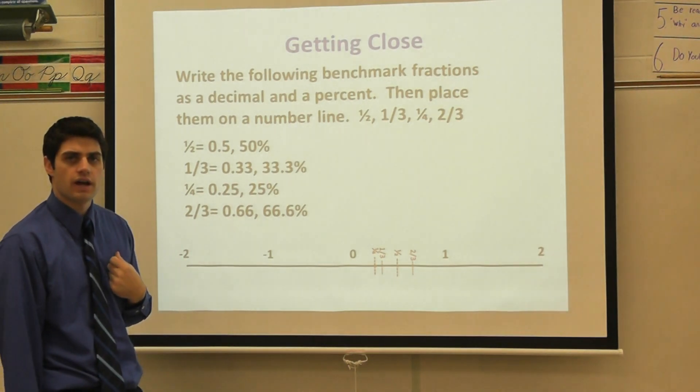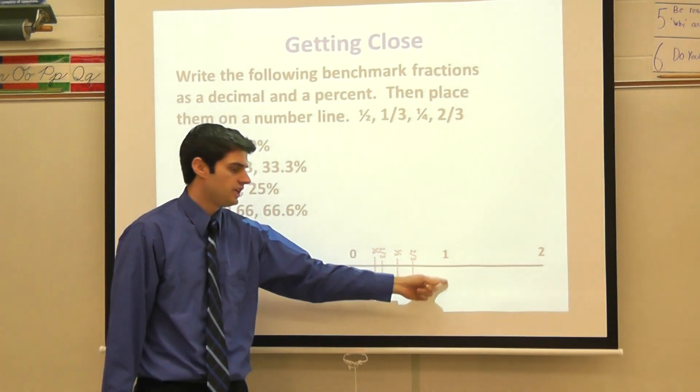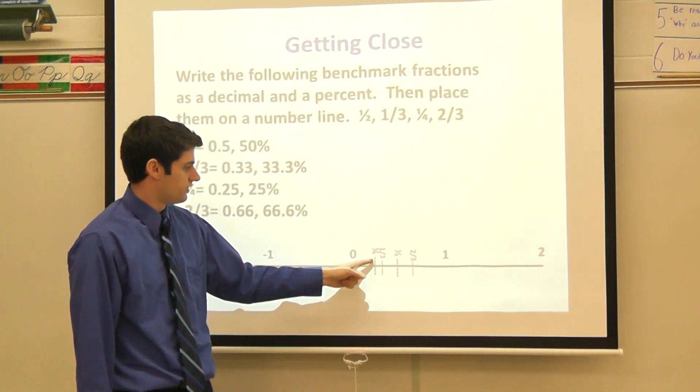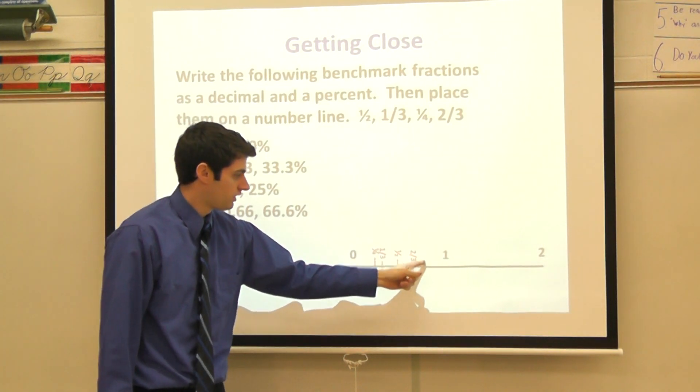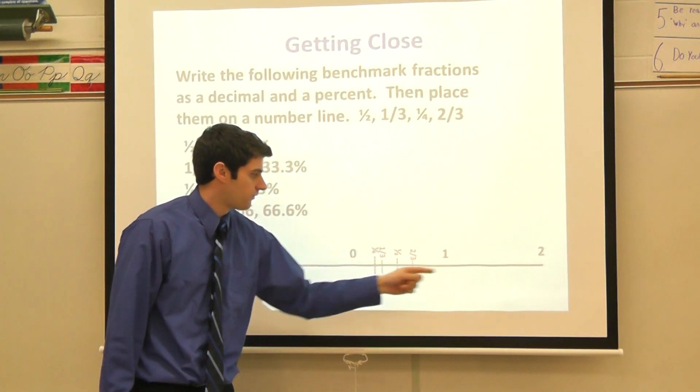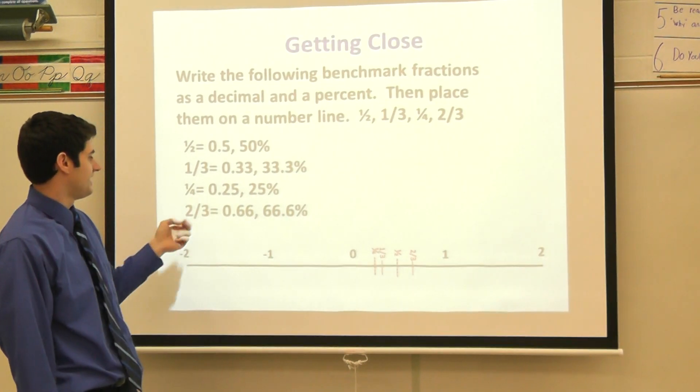Then I look at one-fourth. I know one-fourth is 25 percent. I know that four-fourths would be a whole right there, so this could be one-fourth. Two-fourths is the same thing as a half. Three-fourths would be about there. Four-fourths would be there, so one-fourth would fall here on my number line.